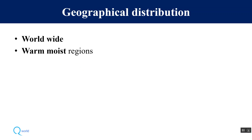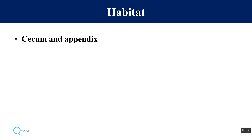The geographical distribution of this parasite is worldwide, but it is more common in warm and moist regions like the tropics and subtropics. Its habitat is usually the cecum and appendix.